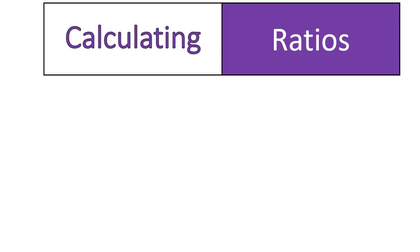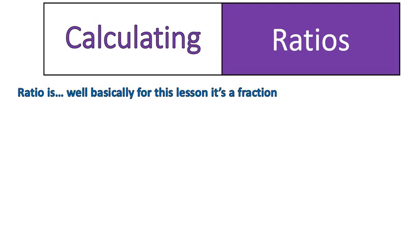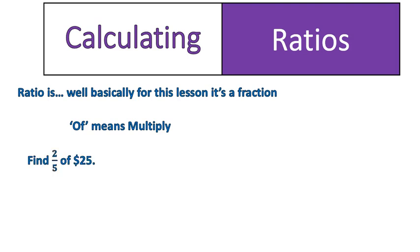When you're asked to calculate ratios, for the purpose of this lesson, basically a ratio is a fraction. You can write a ratio as a fraction, and for everything we're doing in the lesson today, it's basically a fraction. Number two, 'of' means multiply, and that will be consistently the case. You'll see things like, find two-fifths of $25. That's finding a ratio of $25. To find that, you change 'of' to multiply and just multiply two-fifths times 25.